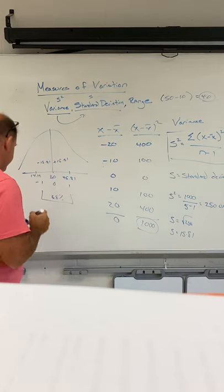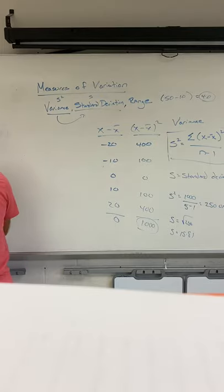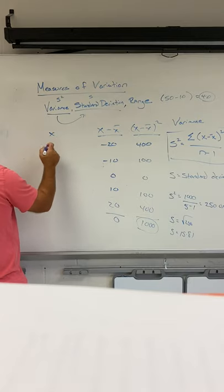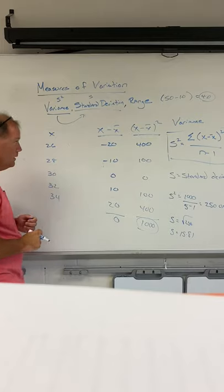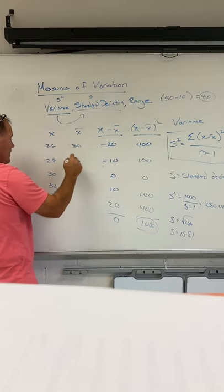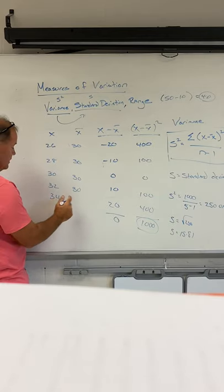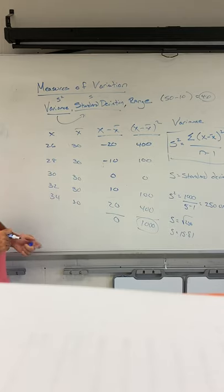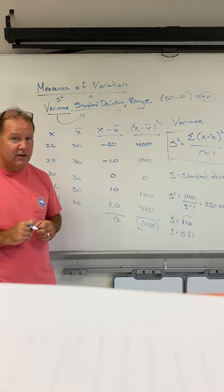Now in the second example that you have on your handout, what you're going to notice is that your X values are very close this time: 26, 28, 30, 32, 34. When you find the mean of these, it's still going to come out to be a mean of 30. But what you should recognize is that because these values are so close to the mean, when you end up getting your standard deviation, this is the second example, it's going to be a lot smaller. It's going to be a lot tighter spread.